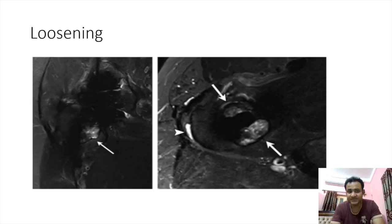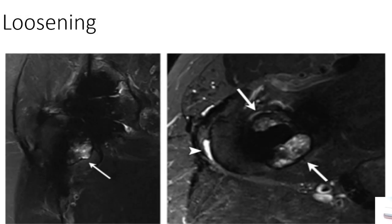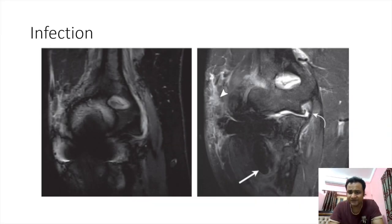Loosening is a lucency or demarcation that appears between the residual limb and the prosthesis. On MRI T2-weighted or fat-suppressed sequences, it appears as a hyperintense linear demarcation. On X-ray, it appears as a lucent lining exceeding 2-3 mm in width, indicating possible loosening. We must inform the orthopedician if the prosthesis is dislodged or not properly lodged and cannot serve its function.